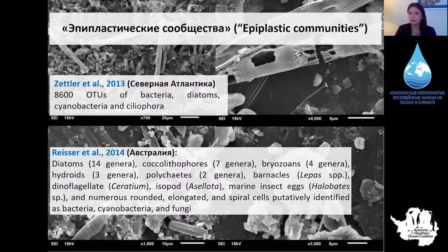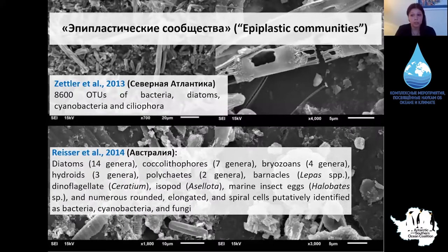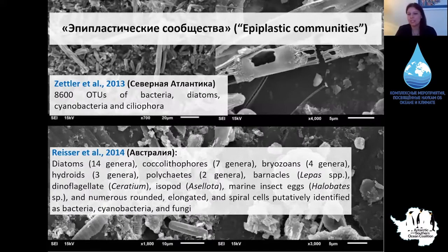Here are publications about the so-called epiplastic communities — examples from the Northern Atlantic and Australia, considering different dimension groups. In both cases, all plastic samples were subject to biofouling. Various organisms were found on their surface — not only small cyanobacteria but also invertebrates. Not all of them are biofoulers; some came in search of food supply, but the phenomenon is evident. I haven't seen papers dedicated to this phenomenon in the Arctic, so if you or your students are interested in plastic biofouling in the Arctic, it's a great and very under-researched new topic.